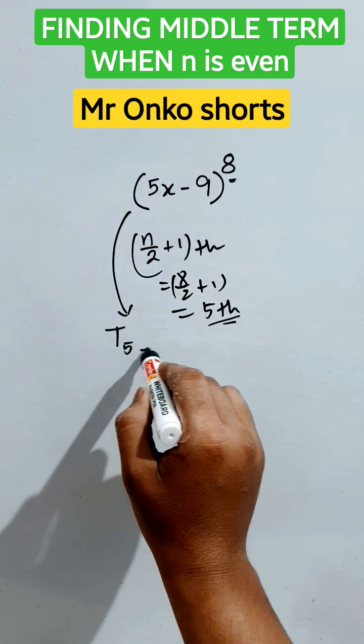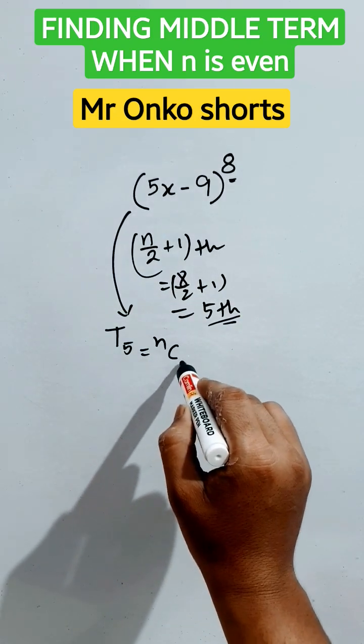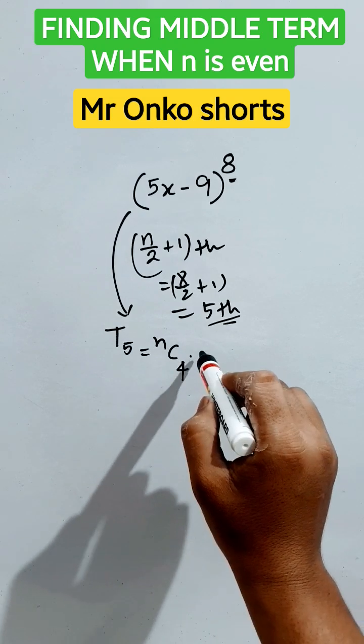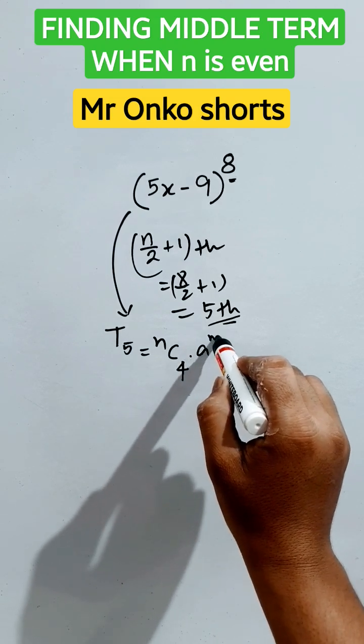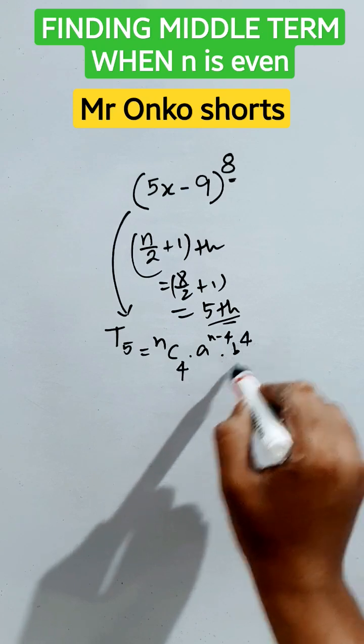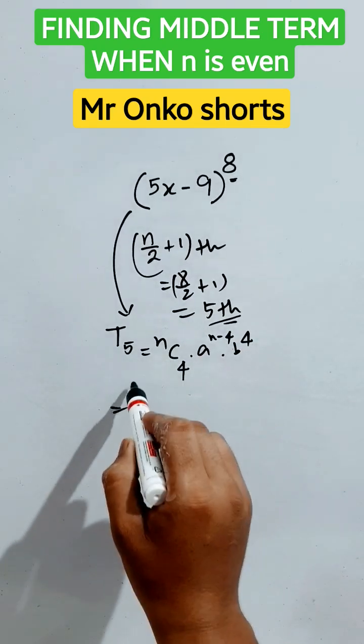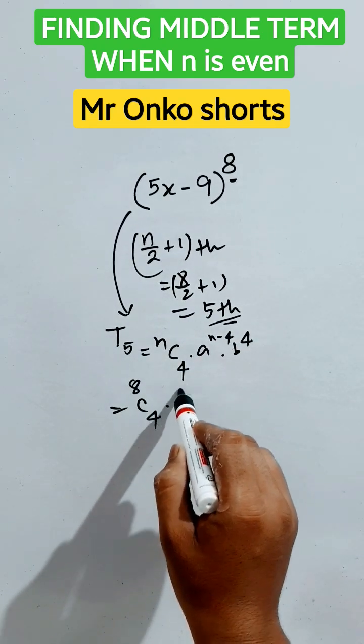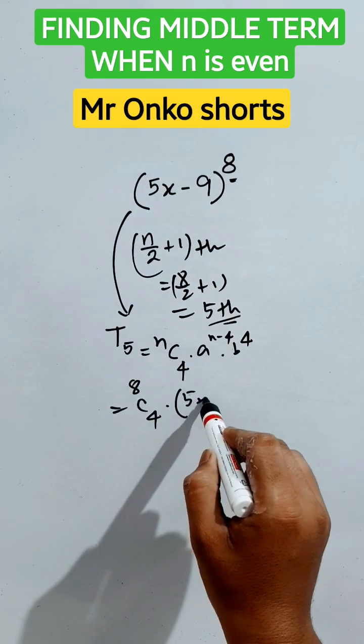That is T₅ equals ⁿC₄ into a to the power n minus 4 into b to the power 4. Ultimately, this will be n is 8 here, ⁸C₄ into a is 5x here, 5x